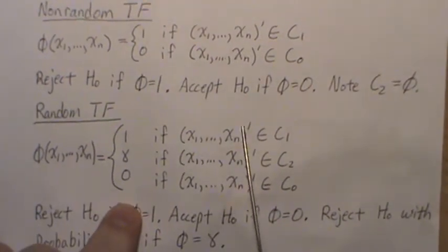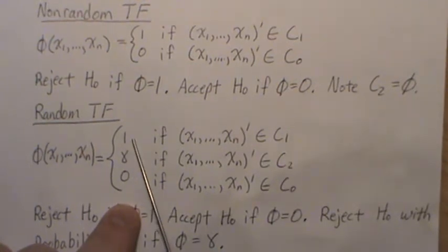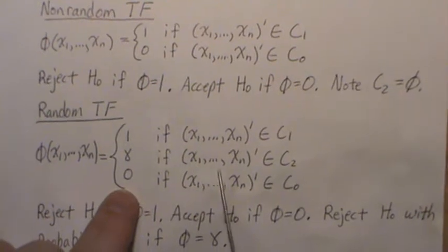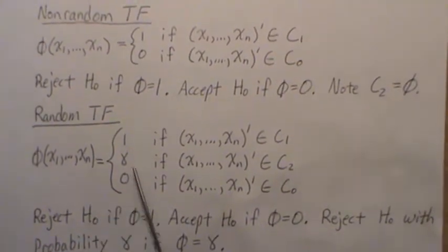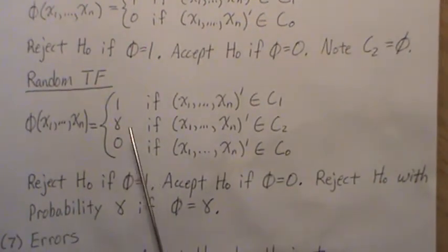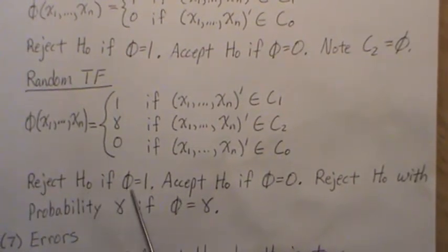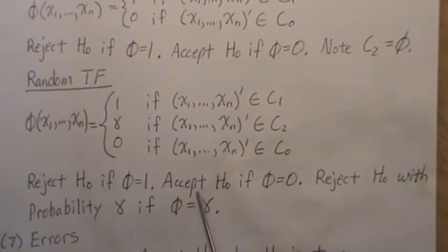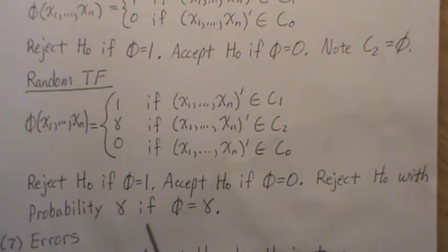The random test function is phi, and it's also a function of our sample. If our sample is in C1 it's a 1, if it's in C0 it's a 0, and if it's in C2 we call it gamma. If phi is 1 we accept H1, we accept H0 if it's 0, and we reject H0 with probability gamma if phi is gamma.